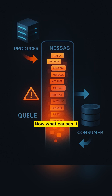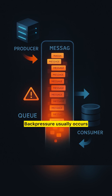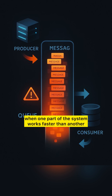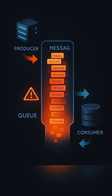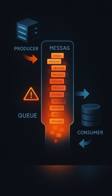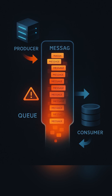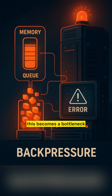What causes it? Back pressure usually occurs when one part of the system works faster than another. For example, if an API produces messages quickly but the database writes slowly, the system starts to overload. Without proper flow control, this becomes a bottleneck.